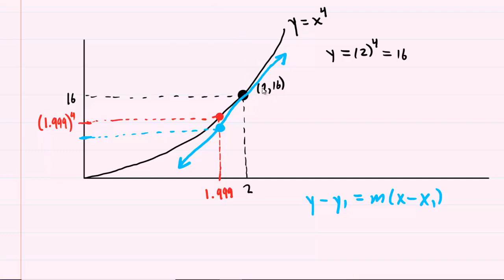We can see that our blue tangent line passes through the point 2,16. So the value of 2 becomes our x1 and the value of 16 becomes our y1. All that we need is the slope. And then once we have the slope, we'll be able to plug in 1.999 to the tangent line equation for x.